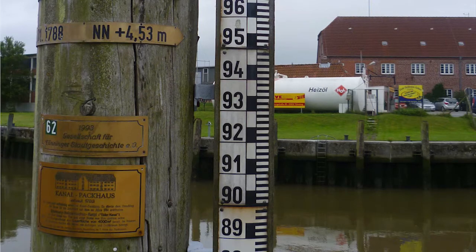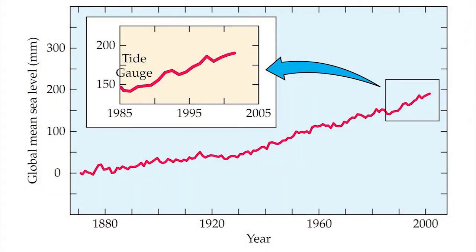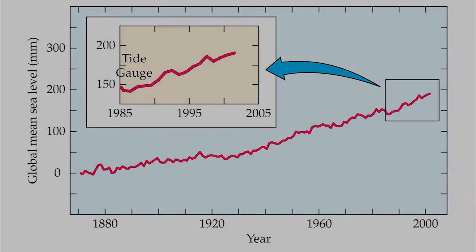One approach involves tide gauges. These instruments are usually located on piers and monitor the height of the sea relative to a nearby geological marker. Data from tide gauges are available worldwide since 1870, and show an average sea level rise of 1.7 millimeters per year over the last century, and 3 millimeters per year over the last decade.